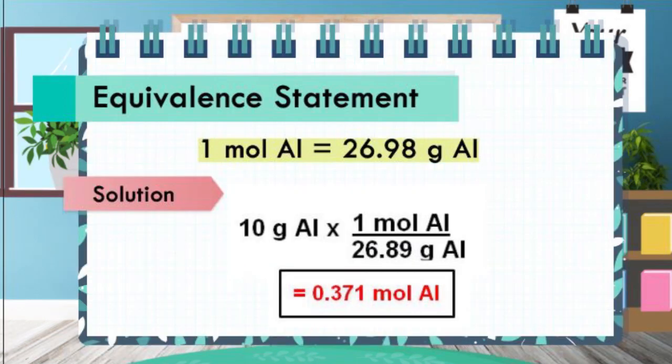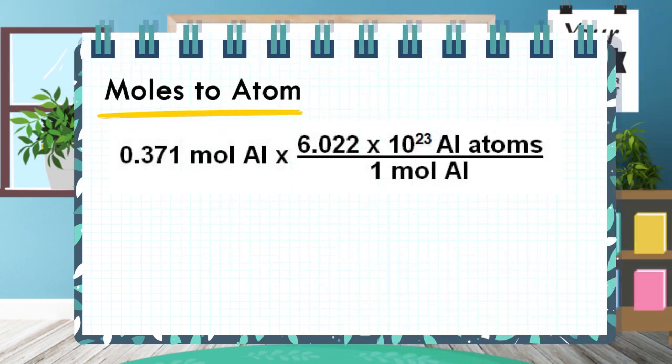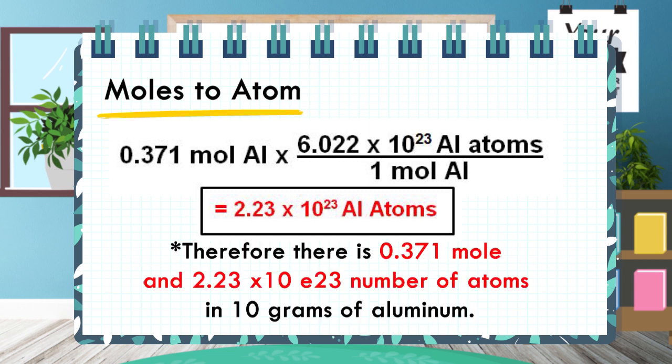Next, we convert from moles to the number of atoms. 0.371 moles of aluminum times 6.022 times 10 to the 23rd power divided by 1 mole of aluminum equals 2.23 times 10 to the 23rd power number of aluminum atoms. Therefore, the answer is: there are 0.371 moles and 2.23 times 10 to the 23rd power atoms in 10 grams of aluminum.